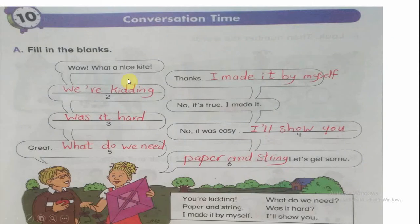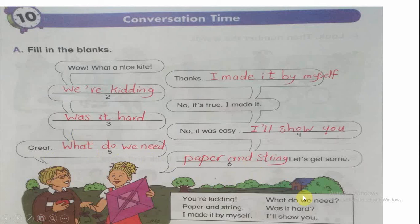Wow, what a nice kite. Thanks, I made it by myself. You are kidding. No, it's true, I made it. Was it hard? No, it was easy. I will show you. Great. What do we need? Paper and string. Let's get some. Finished exercise A.